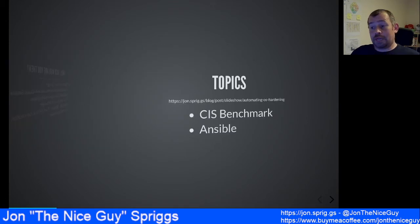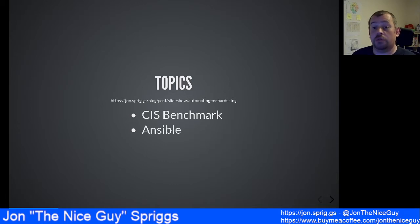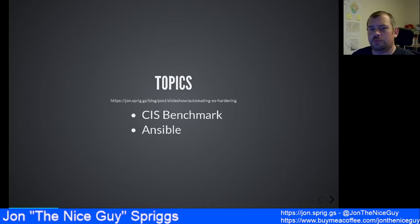What am I going to be talking about? Well, this is a talk for the blue teamers out there. I'm talking about hardening your operating systems and server applications with a framework called the CIS Benchmark. I'm also talking about an automation tool called Ansible. This may already be in use in many of your organizations, or if not Ansible then something similar. The main alternatives I know about are Puppet, Chef, and Salt.